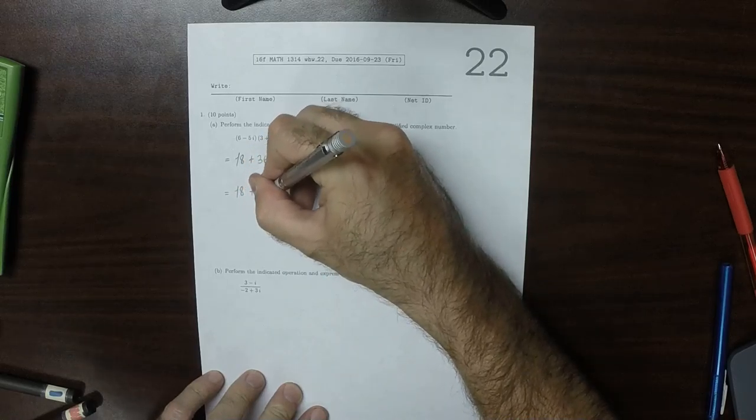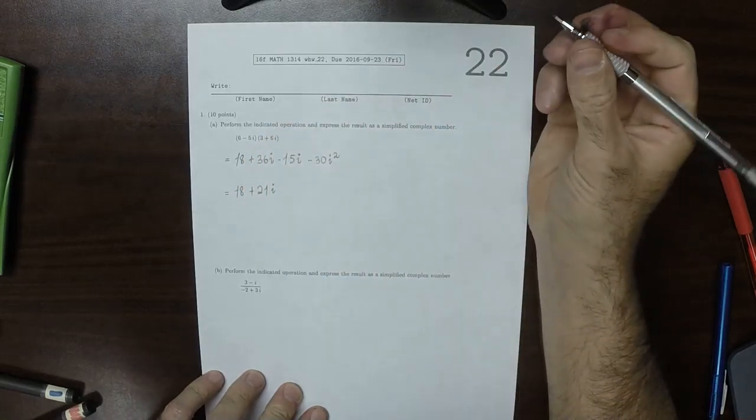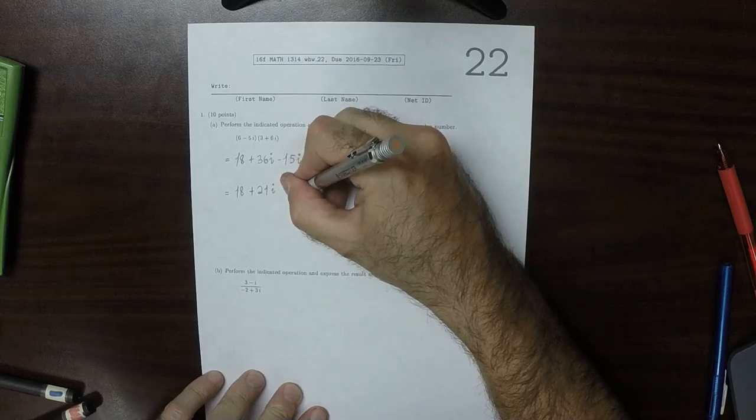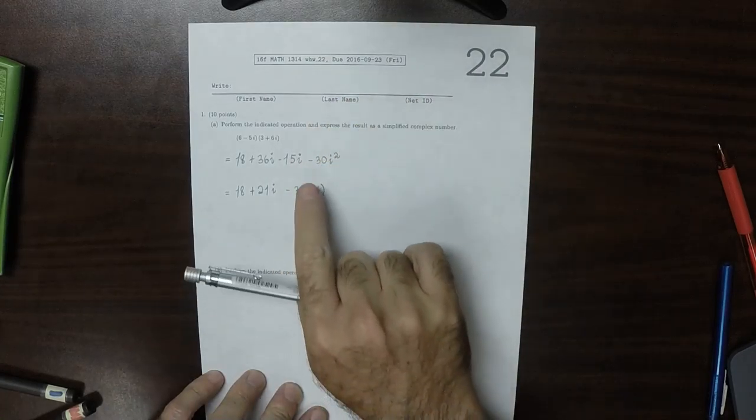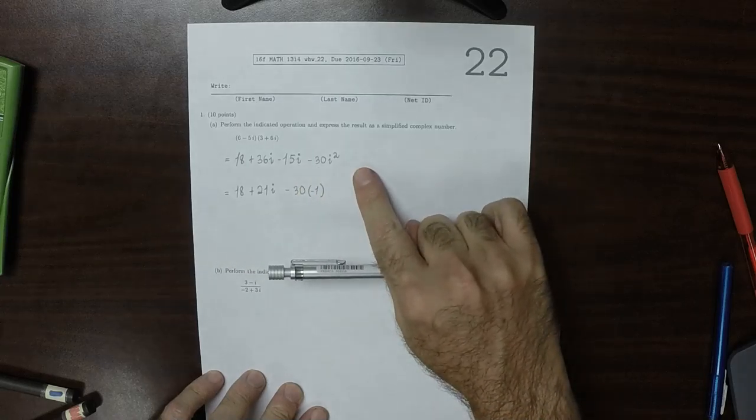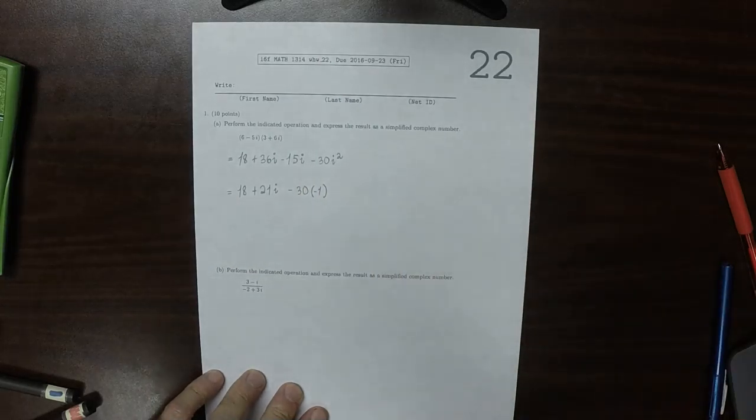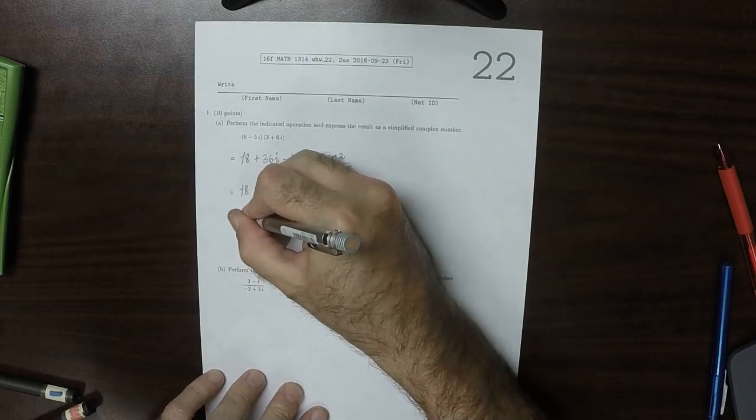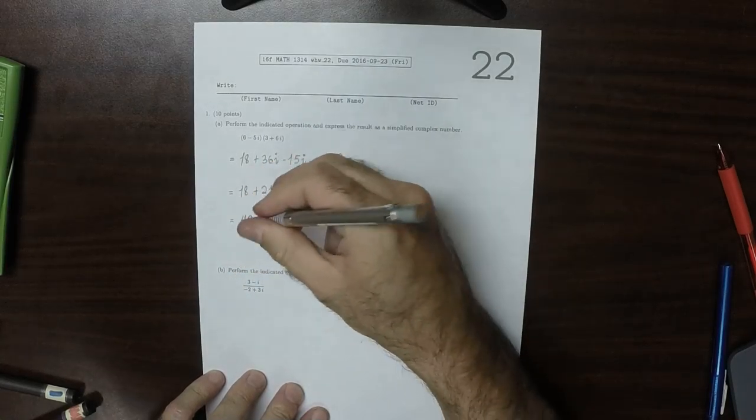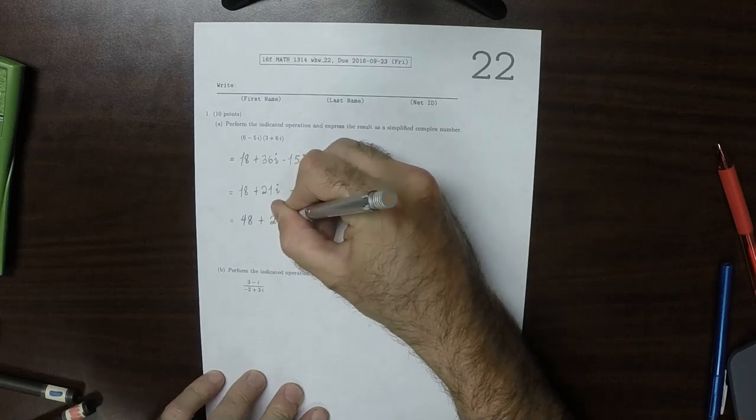36i minus 15i is 21i, so plus 21i. Then minus 30i squared, but i squared is negative 1, so subtracting 30i squared is the same as adding 30. So 30 plus 18 is 48, giving us 48 plus 21i as the answer to part a.